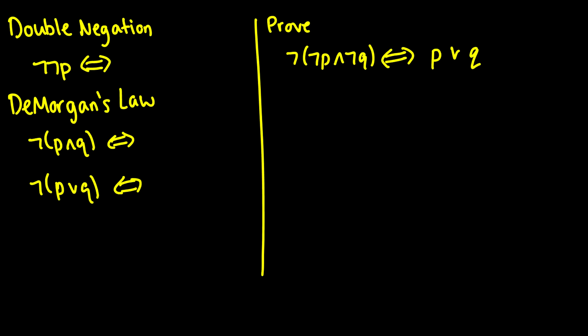Some more laws here. We have double negation, which means that if we have not not P, it is equal to P. This should be intuitive. If P is true, then not P is 0, so not not P should be true.